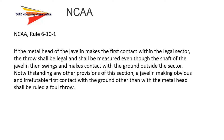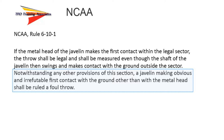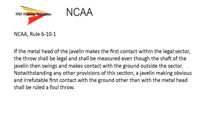However, it is the second sentence that specifically addresses the proper landing of the implement: notwithstanding any other provisions of this section, a javelin making obvious and irrefutable first contact with the ground other than with the metal head shall be ruled a foul throw. Notice that the rule says 'obvious and irrefutable first contact' — thus the javelin must clearly land with the metal head hitting first for the throw to be valid.